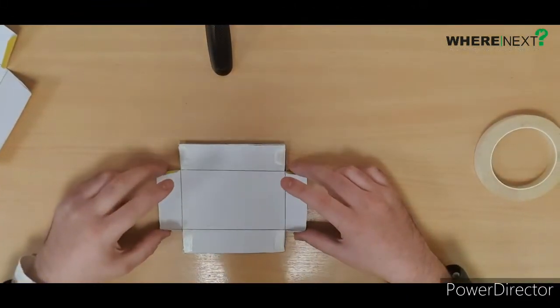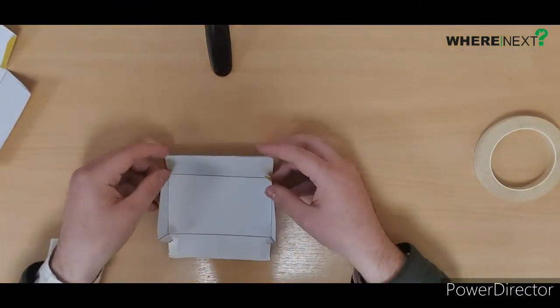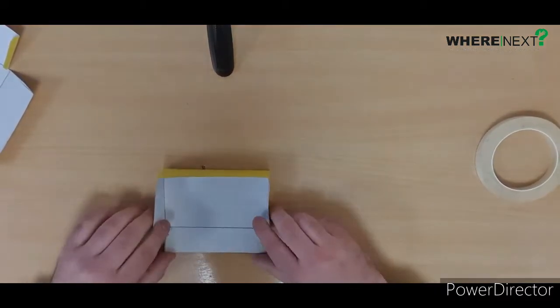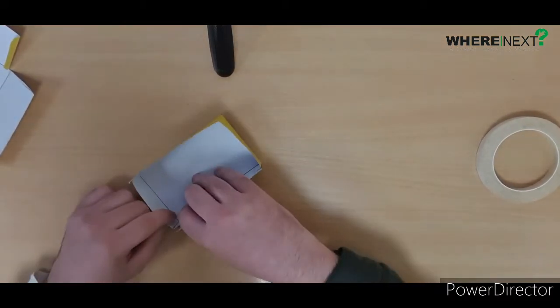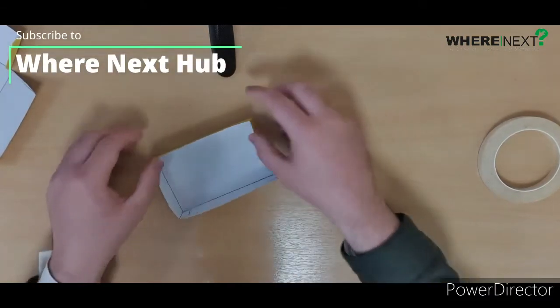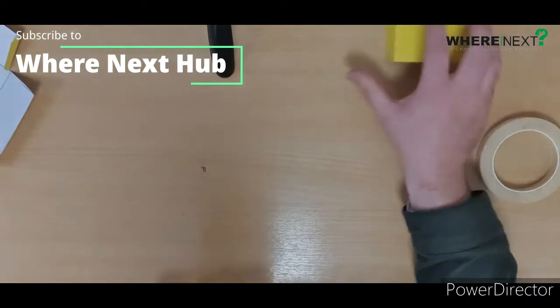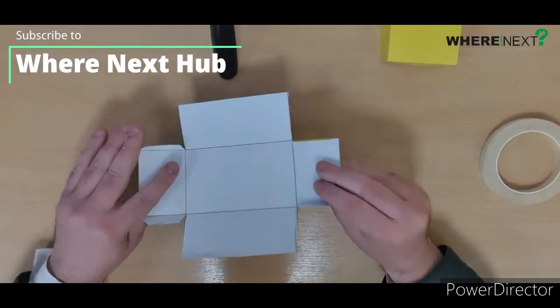We're going to peel it off and stick it together. If you're using double-sided tape, just stick down. Same on the other side. Make sure you get it all lined up, all square. And there's the top, that's the lid. Then do exactly the same to the bottom.